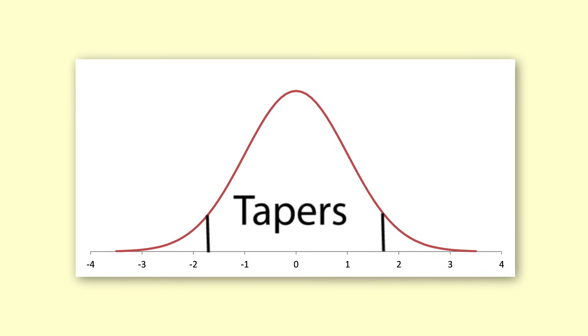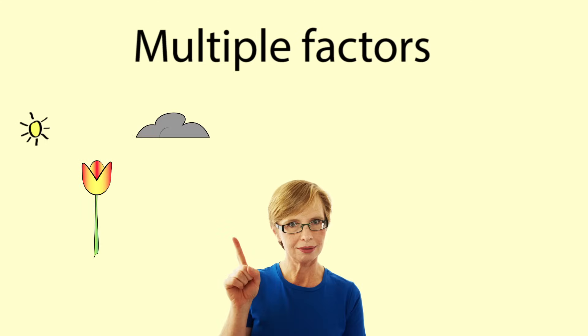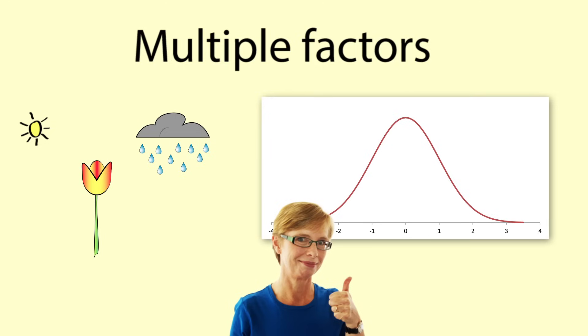Tapers: The further you get from the mean, the fewer people or things occur, so the distribution tapers out in both directions. Caused By Multiple Factors: Whenever there are many different factors affecting an outcome, we tend to get something that is well modelled by a normal distribution.